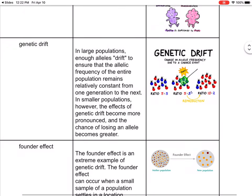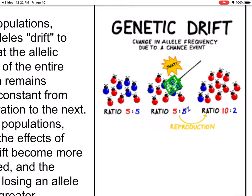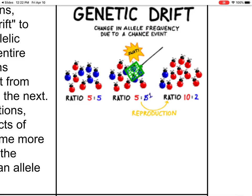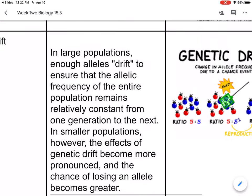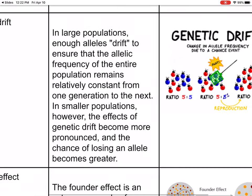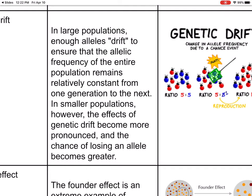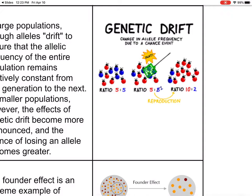Genetic drift. Looking at the picture: we have 5 to 5, then 5 to 1 because they get swatted or killed off, then reproduction, and the ratio becomes 10 to 2. It looks like they swatted all the blue ones — so if blue ones are weaker, we're going to have more red. In large populations, enough alleles exist so that the allelic frequency of the entire population remains relatively constant from one generation to the next. In smaller populations, the effects of genetic drift become more pronounced and the chances of losing an allele become greater.